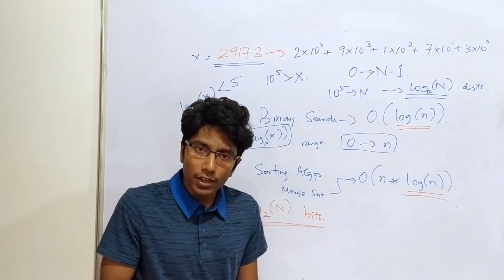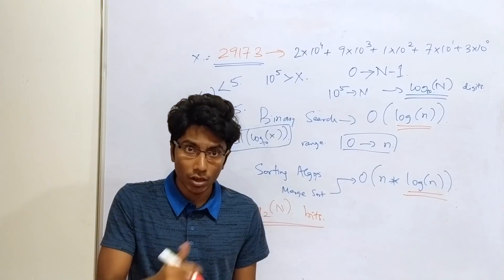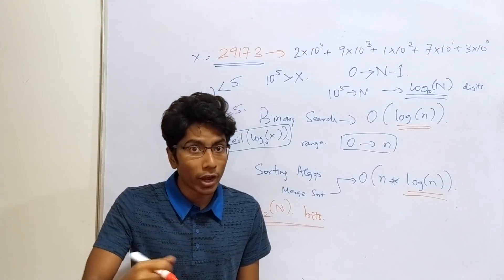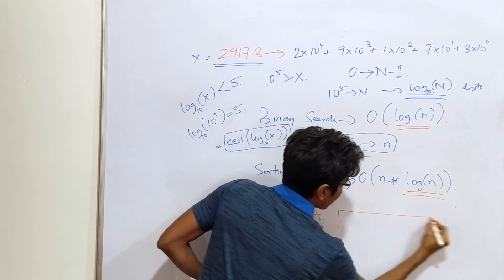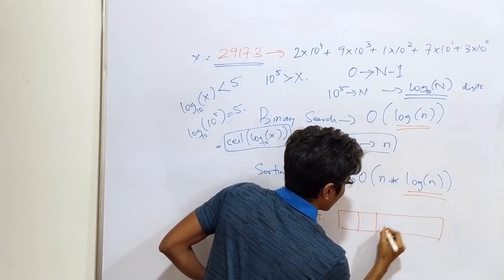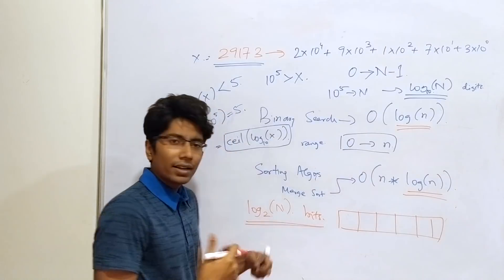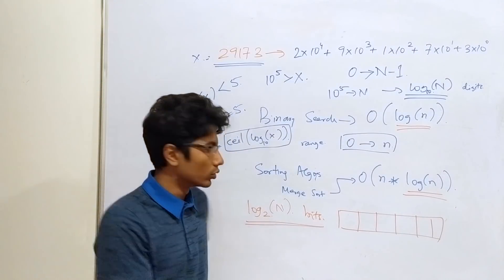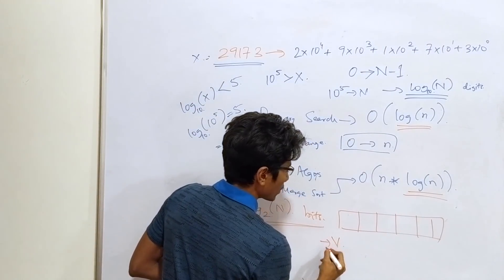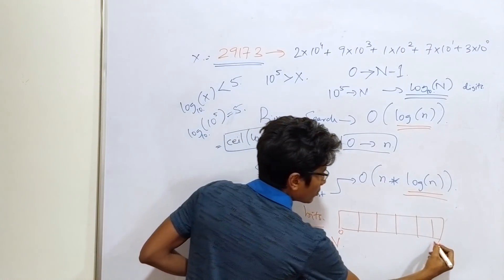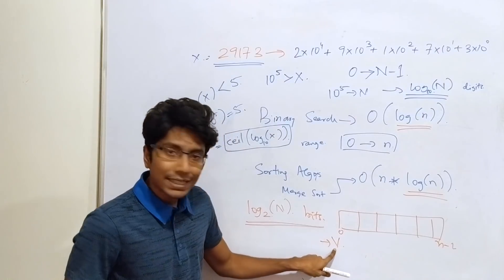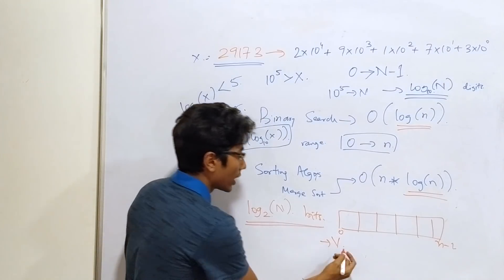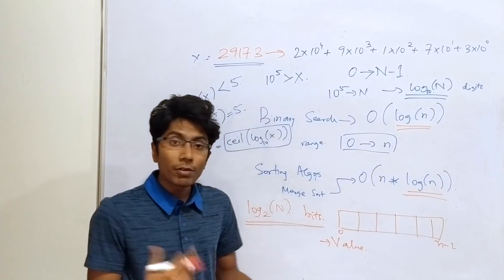To uniquely identify a number in a given range, 0 to n minus 1, you need log n bits. Which means that if I have an array, and I say that I need to search for a value, right? Some value v. And the indexes are from 0 to n minus 1. Essentially what I am saying is, for this index, for this value actually, give me an index.